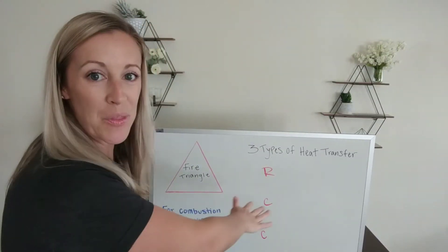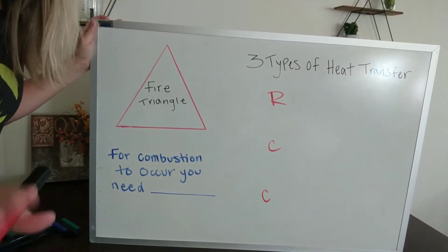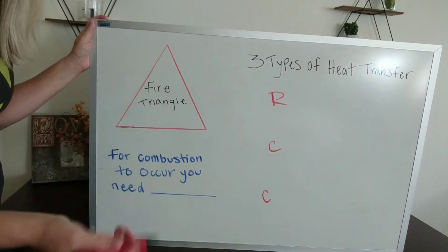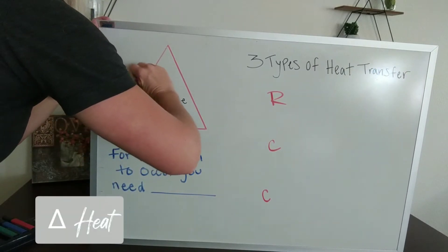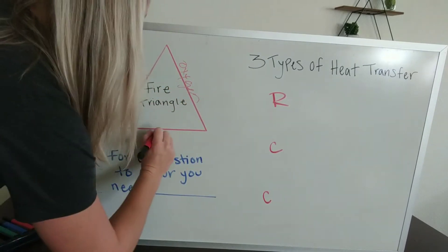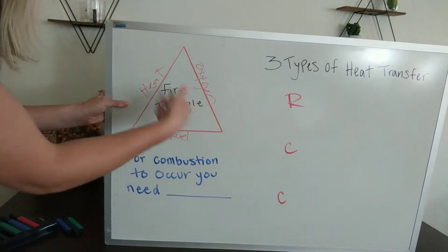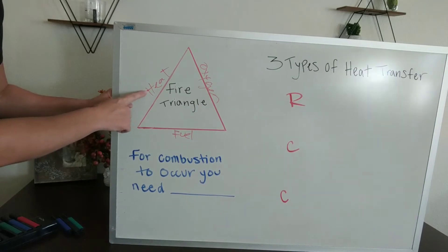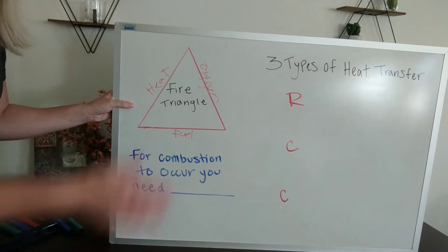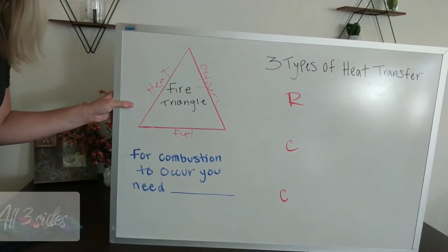For this portion we're busting out the whiteboard, so I'll zoom you guys in so you can see a little bit easier. So you have your fire triangle, which has three sides: heat, oxygen, and fuel. You have to have fuel to burn, you have to have air to supply oxygen to the flame, and you have to have heat to start and continue the combustion process. If you don't have one side of this triangle, you will not have a fire — for combustion to occur you need all three sides present.